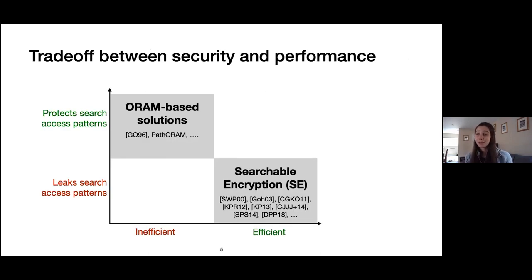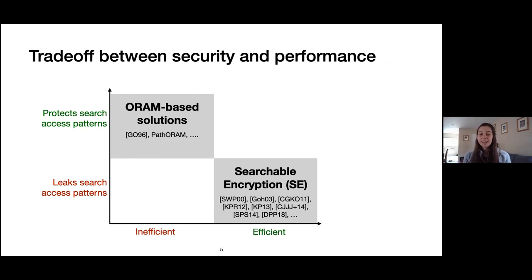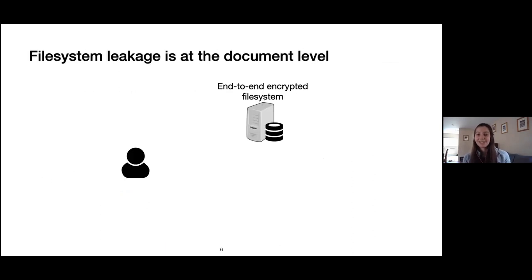Over the past 20 years, researchers have been working on the problem of encrypted search. Existing solutions generally fall into one of two categories: searchable encryption schemes that are efficient but leak search access patterns, and ORAM-based solutions that are inefficient but protect search access patterns. To understand this trade-off, I want to talk about what search access patterns are and why we should care about them.